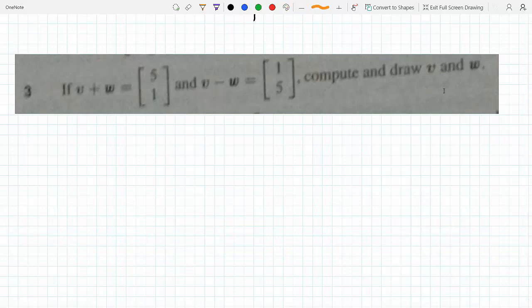If I just add them, add v plus w plus v minus w, what would happen is the w would cancel out, and then I would add the corresponding components.